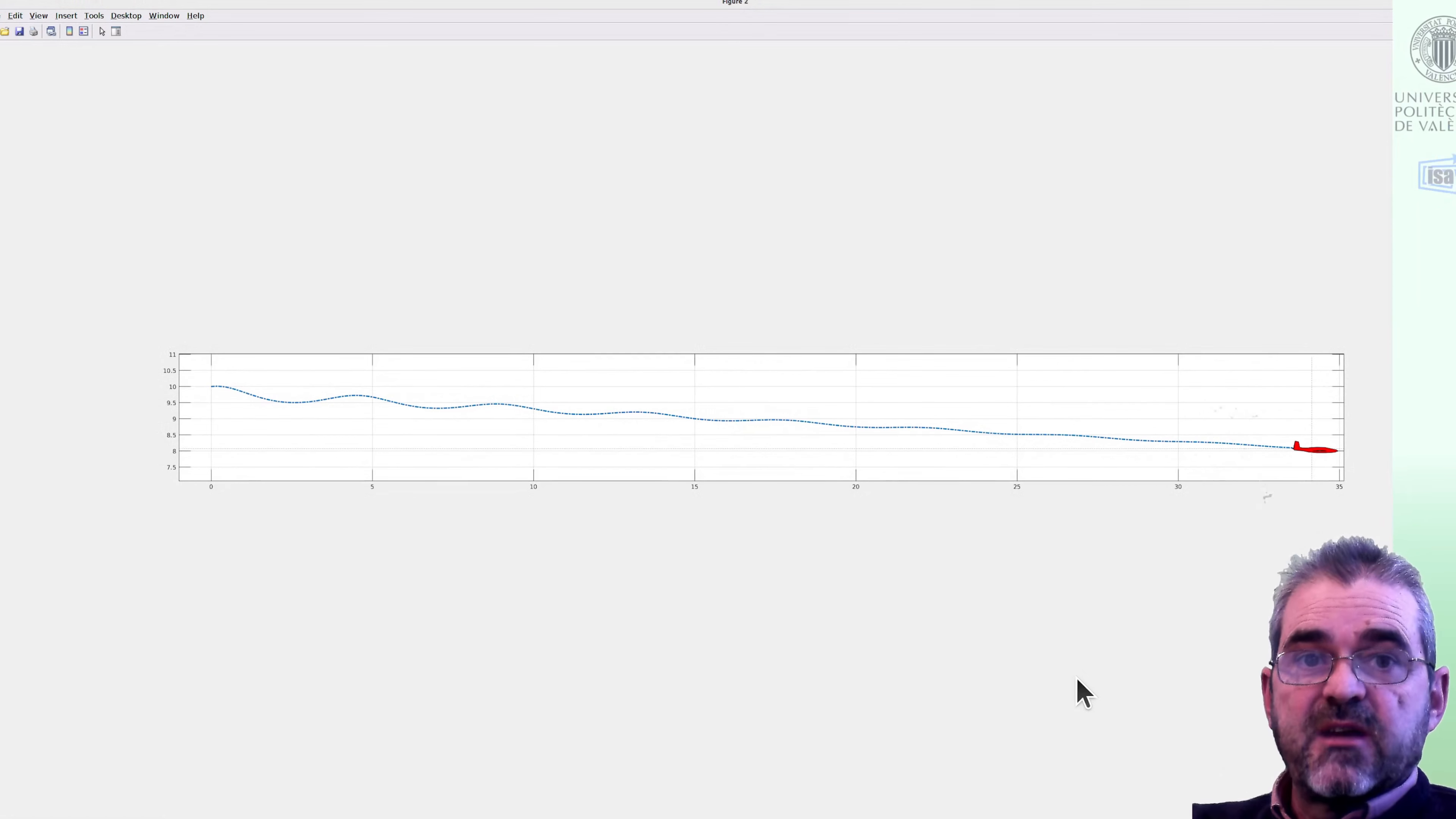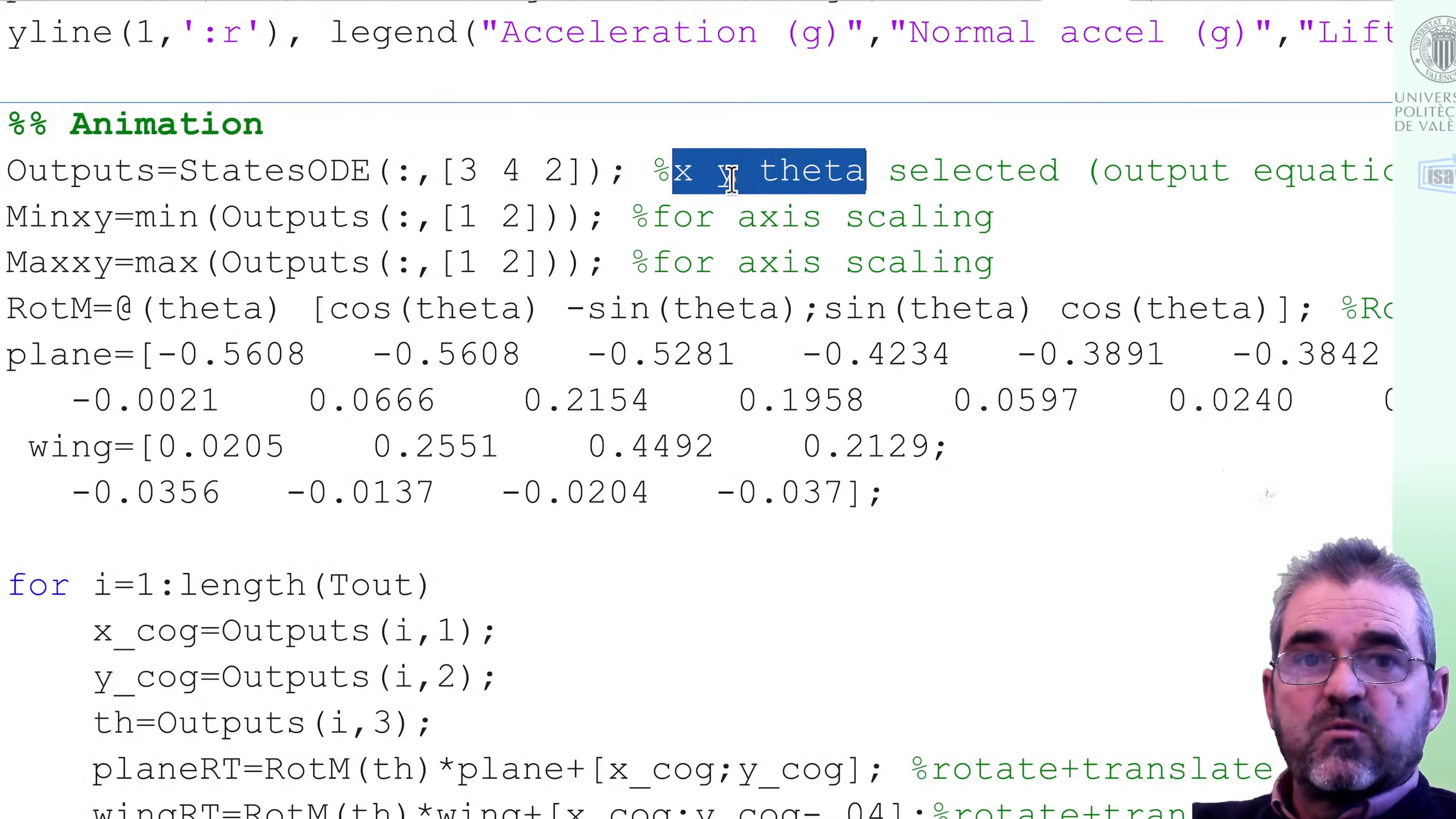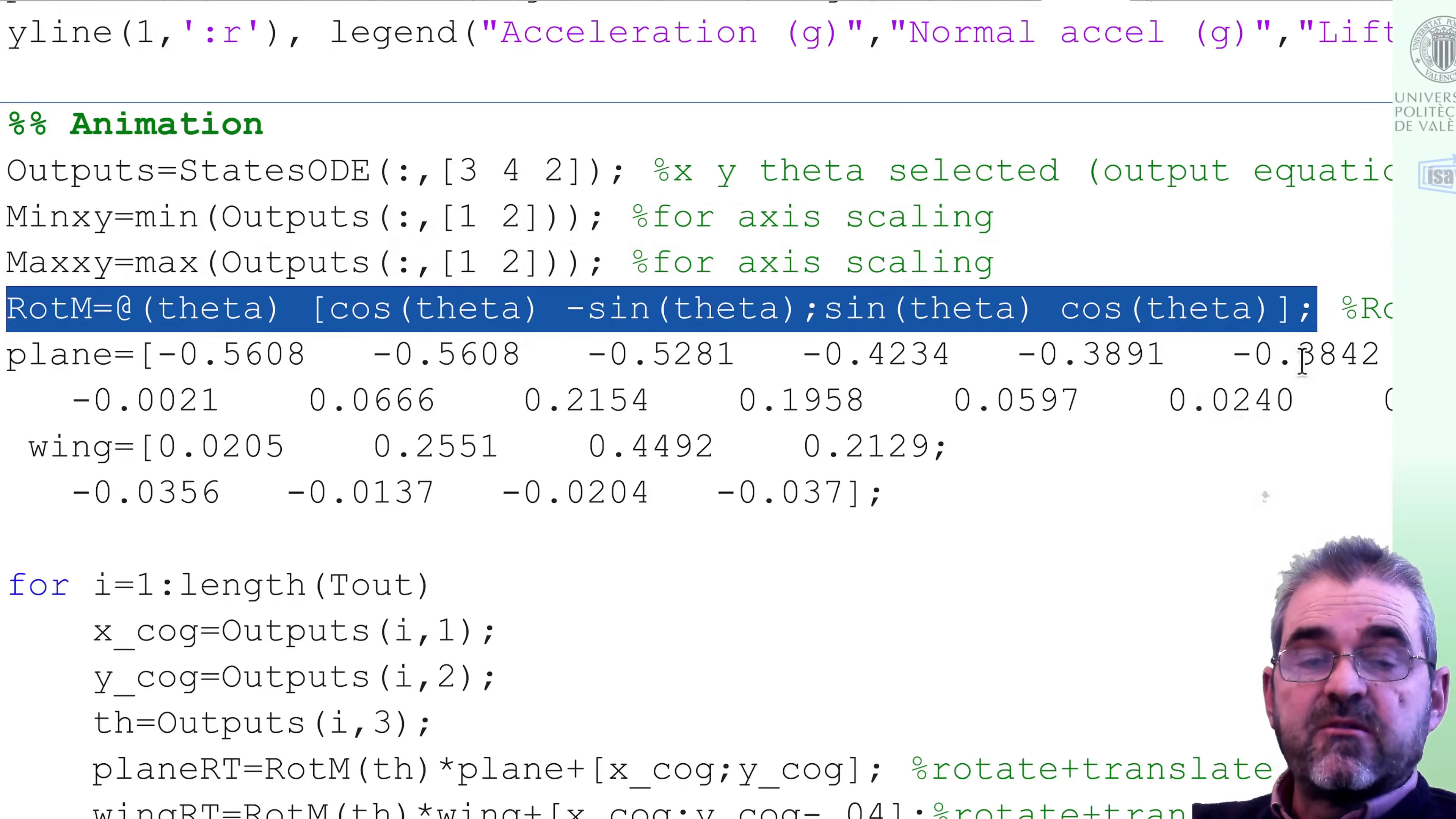So, let's see this animation code. We'll first store in the output variable the position x, y, and the pitch angle theta for later use. These two lines will be used in axis scaling. They are just cosmetic.